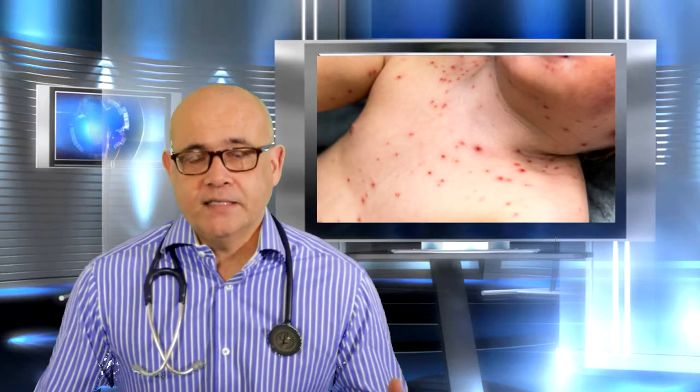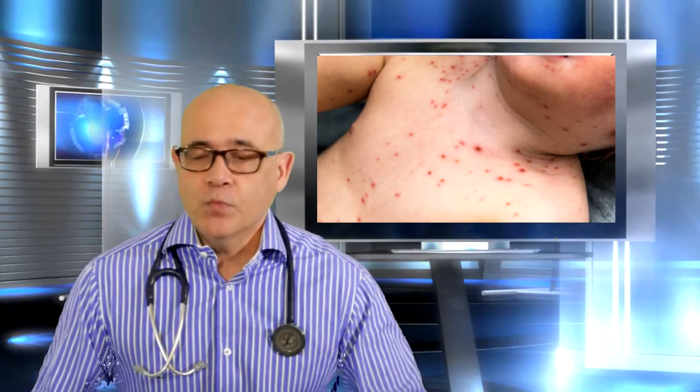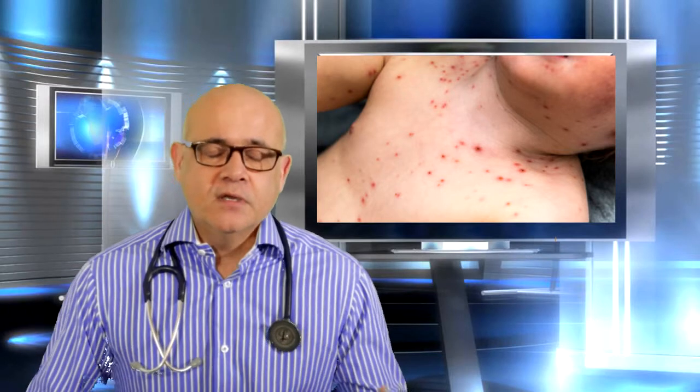Chickenpox is characterized by vesicular lesions in different stages of development, mostly starting on the face and trunk, and it can go on the extremities as well, but predominantly face and trunk. The secondary infection is herpes zoster, also known as shingles.